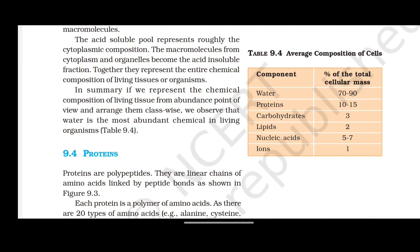In summary, if we represent the chemical composition of living tissue by abundance and arrange them class-wise, water is the most abundant chemical in living organisms. The average compositions of cells are: water 70–90%, proteins 10–15%, carbohydrates 3%, lipids 2%, nucleic acids 5–7%, and ions 1% of total cellular mass.